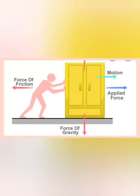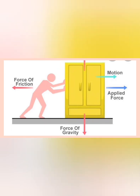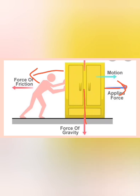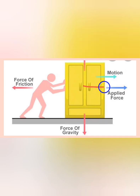In this diagram, a person is trying to push an object which is at rest. The applied force acts in one direction, and the force of friction is opposite to that direction of motion. Other forces also act on the object — the force of gravity and the normal reaction force. Since we are dealing with frictional force, we mainly focus on these two forces. This is an example of static friction.